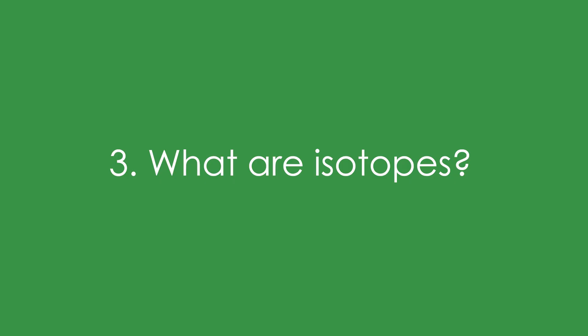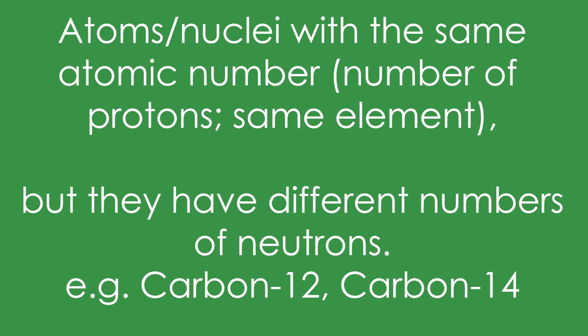3. What are isotopes? Isotopes are atoms or nuclei with the same atomic number, that's the same number of protons, same element, but they have different numbers of neutrons, so they have a different mass.